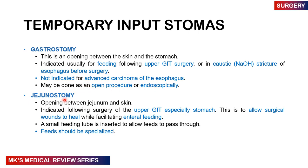You may also have a jejunostomy, which is an opening between the jejunum and the skin. It is indicated for surgery of the upper GI, especially the stomach, to allow the surgical wound on the stomach to heal and to facilitate enteral feeding. A small feeding tube is inserted to allow feeds to pass through, and the feeds need to be specialized — you cannot feed them food meant to be taken by mouth, because processes happen in the mouth and stomach. You have to buy a special type of feed required for jejunostomy.